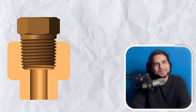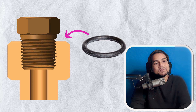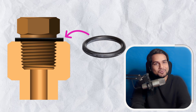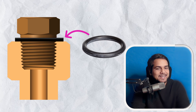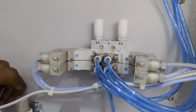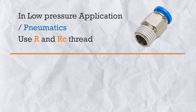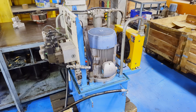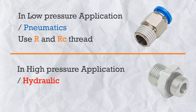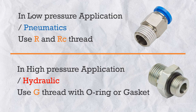Just for curiosity — can we use taper thread with an O-ring to further improve sealing? No. With taper threads, the connection face matching can be difficult, so always avoid using an O-ring with taper thread. In summary: for low-pressure applications like pneumatics or gases, use taper thread — R and RC thread. For high-pressure applications like hydraulics, always use G thread with an O-ring.